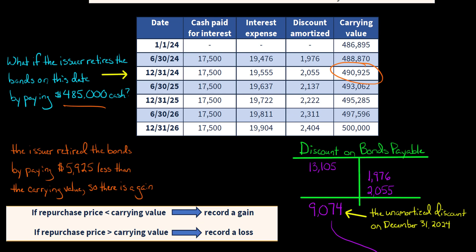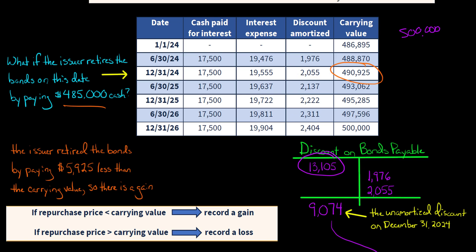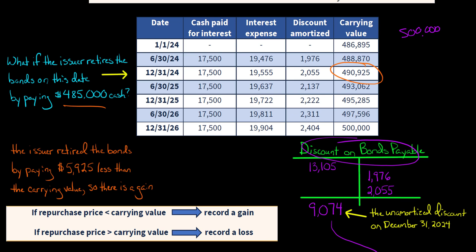Now I'll show you a T-account for the discount on bonds payable. When the bonds were originally issued for $486,895, the face value was $500,000, so the initial discount on bonds payable was $13,105. The company then had two interest payment dates and twice amortized some of the discount. The unamortized discount on bonds payable — the amount remaining to be amortized when the bonds are retired — is $9,074. We'll need to deal with this in our journal entry.